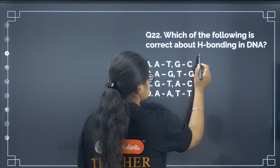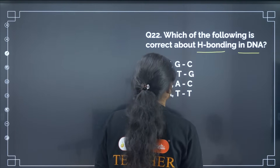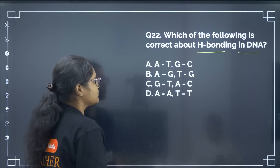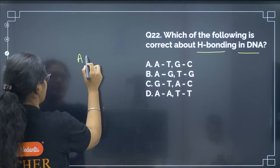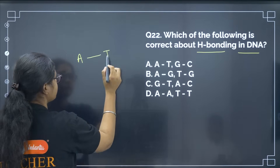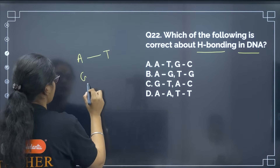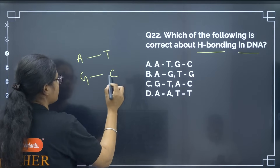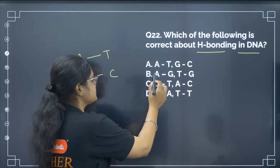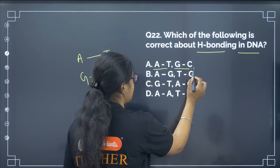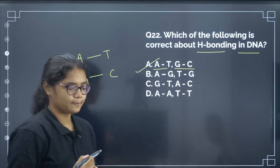Which of the following is correct about hydrogen bonding in DNA? Adenine forms hydrogen bonds with thymine, and guanine forms hydrogen bonds with cytosine. So the correct answer is A-T and G-C, that is option number A.